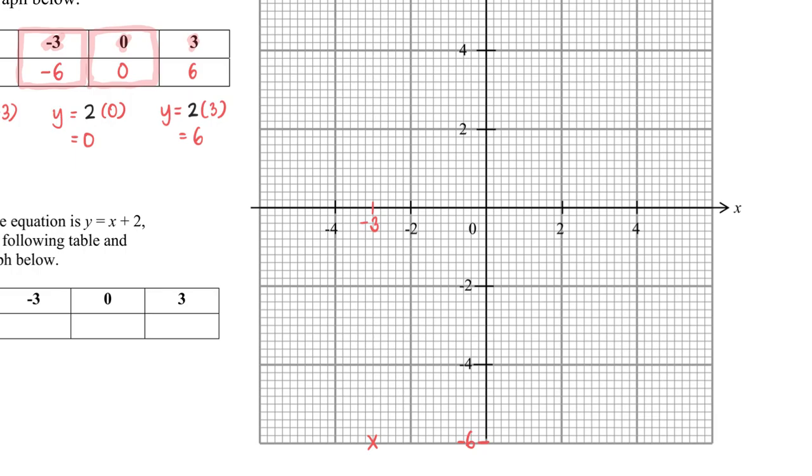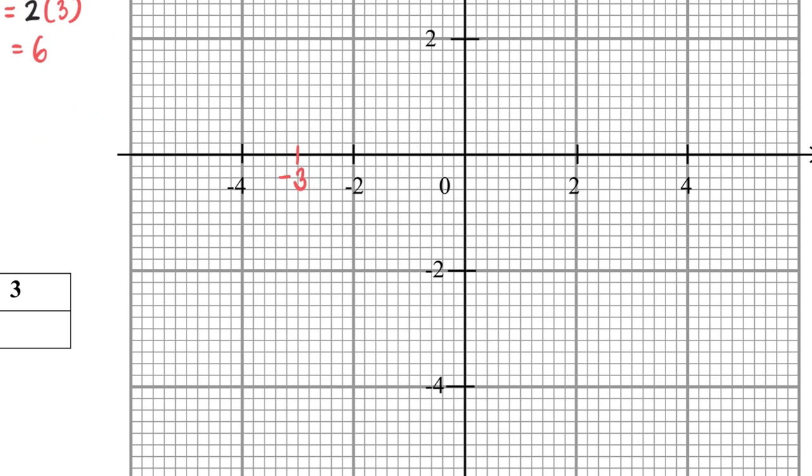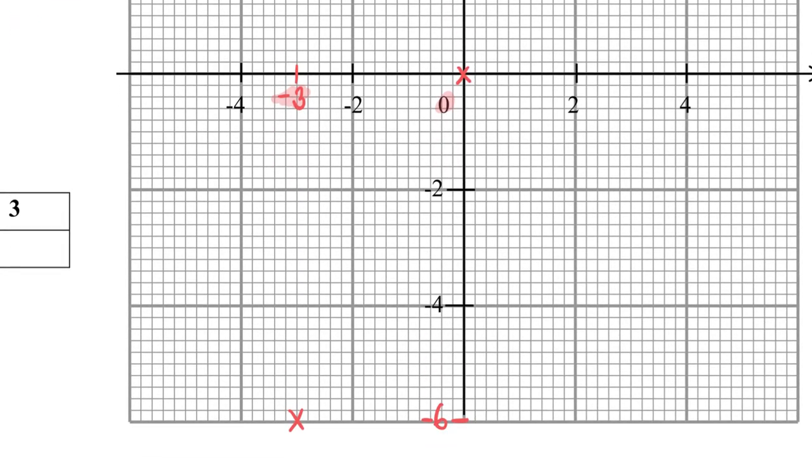X is zero, y is zero. That happens to be this particular point here in the middle, the origin, where the x is zero and the y is also zero. Just now the x was negative 3 and the y was negative 6.